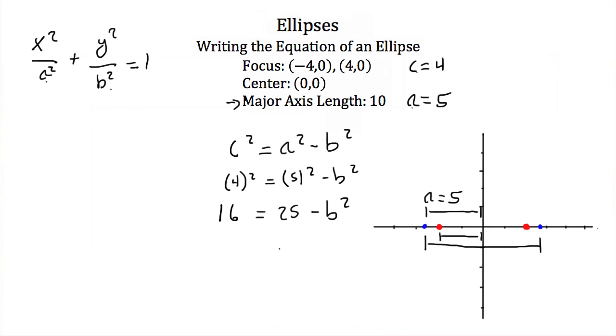Subtract 25 from both sides. I'll have negative 9 is equal to negative b squared or b squared is equal to 9. Take the square root of both sides and ignore the negative answer and we'll get that b is equal to 3.